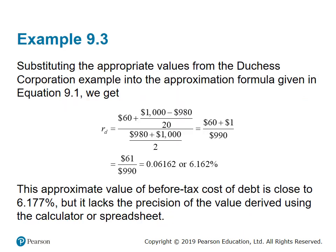Substituting the appropriate values: the yield to maturity is 6%, so the annual interest I = 6% × $1,000 = $60. Plugging in: numerator = $60 + ($1,000 − $980)/20 = $60 + $1 = $61. Denominator = ($980 + $1,000)/2 = $990. So the before-tax cost of debt = $61 / $990 ≈ 6.16%. The more precise value using a calculator or spreadsheet is approximately 6.17%.